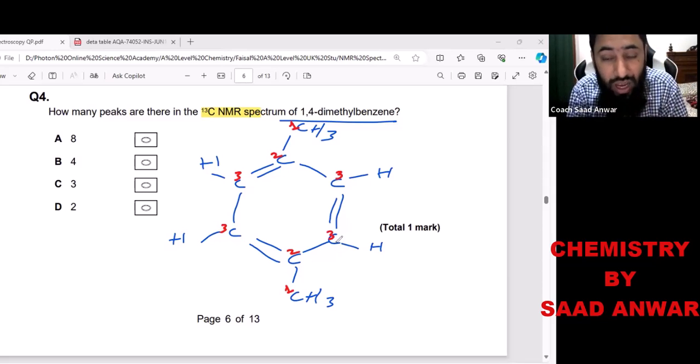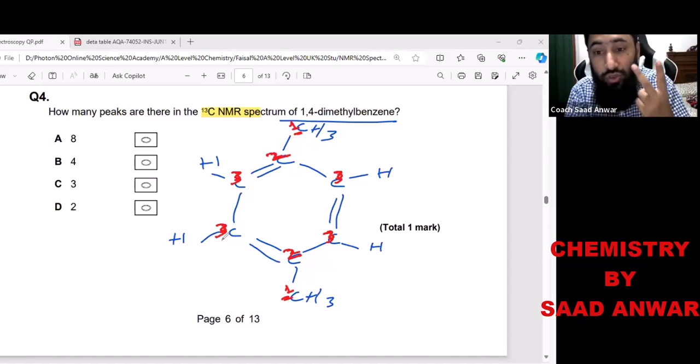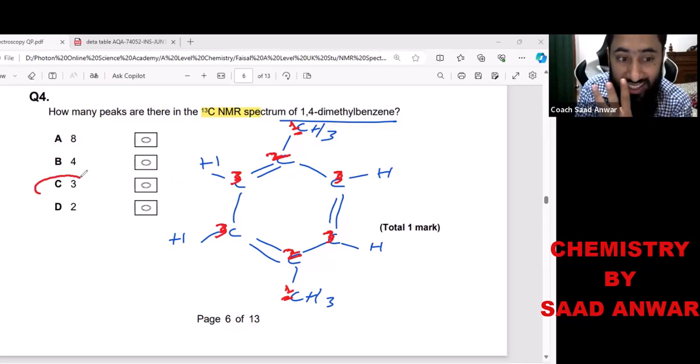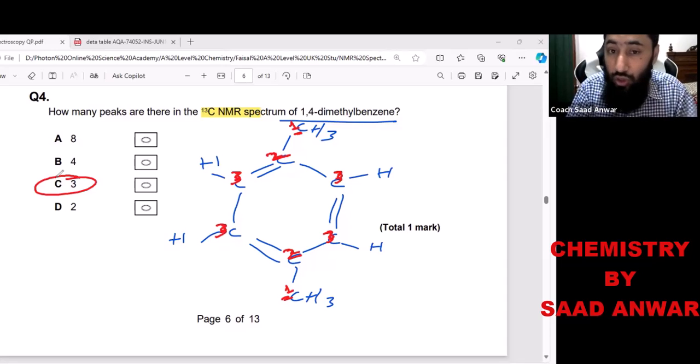All of these four carbons will give you one peak. So again, this carbon will give you one peak, and that carbon collectively gives you one peak. While the carbon number two - these two carbons collectively give you another peak. These four carbons will give you one another peak. So total how many peaks? Three peaks. Option C is the answer.